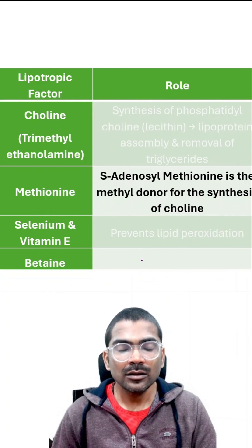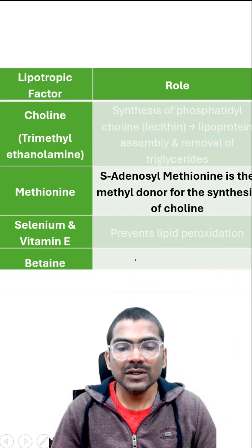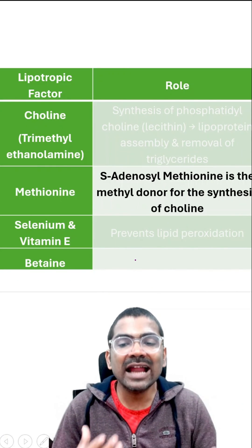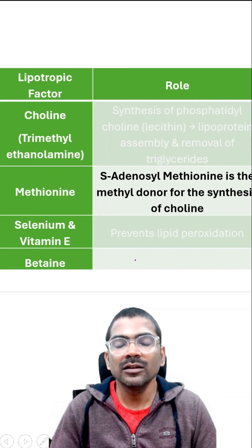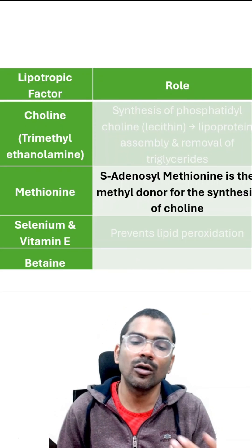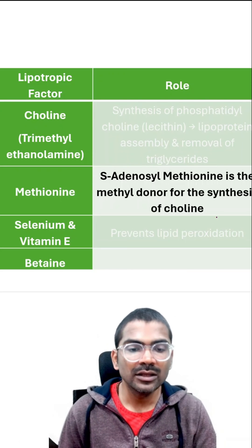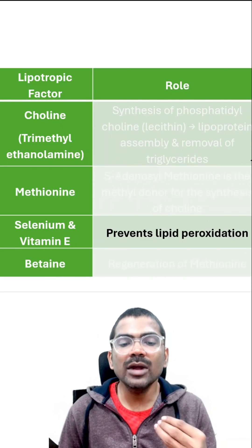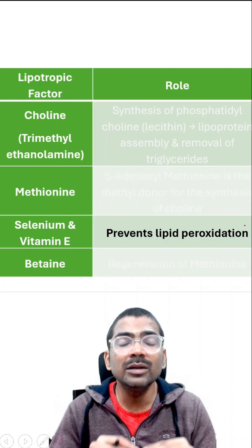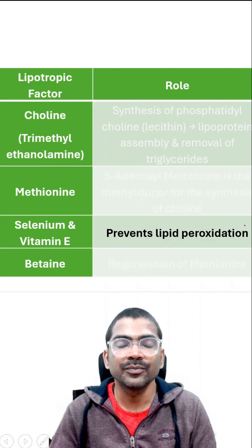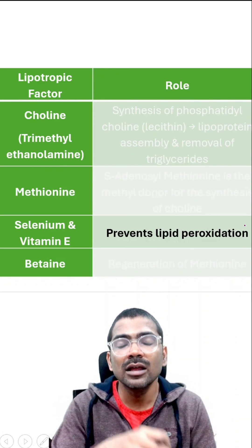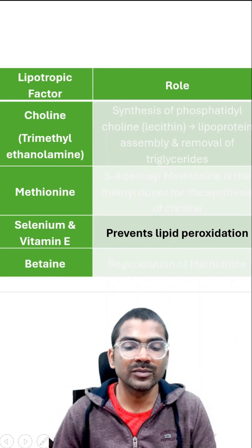Methionine produces S-adenosyl methionine, which is the active methionine and the methyl donor for the synthesis of choline. Methionine, selenium, and vitamin E prevent lipid peroxidation. If there is lipid peroxidation, lipids will accumulate in the liver.